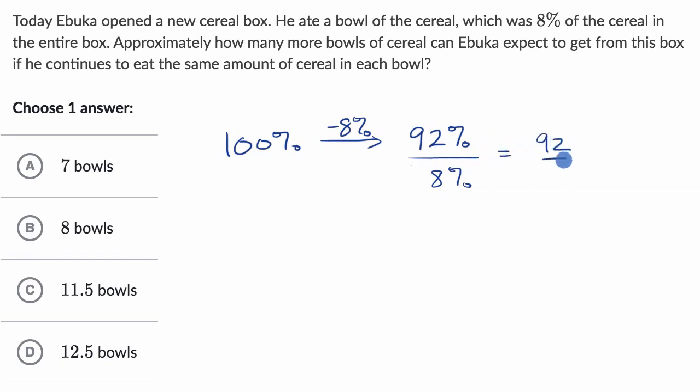And so, 92 divided by 8, see, 8 times 11 is 88, and then you have four more, so this is going to be 11.5 bowls, and that is this choice right over here.